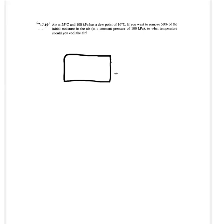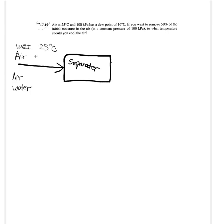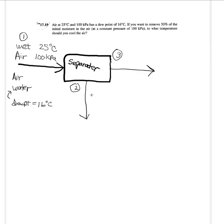Let's see what that means in practice. You want to draw a picture diagram of the system, and essentially what it is is a separator, because you are separating dry air from water vapor. You have moist air coming in — we can call it wet air — and we break that up. We know it's at 25°C and 100 kilopascal, and it has a dew point equal to 16°C. We want to remove water, so I'm going to call this stream 1, this will be stream 2, and this will be stream 3.